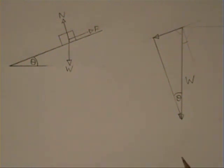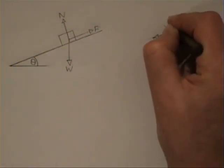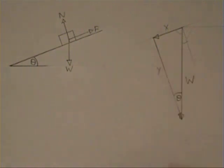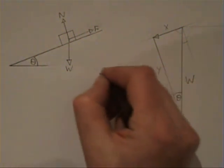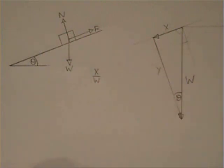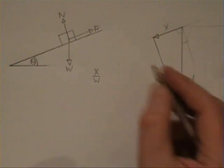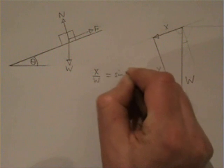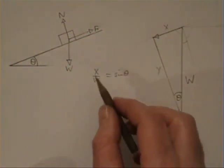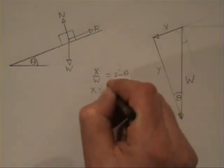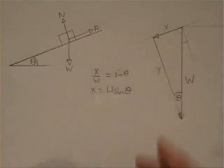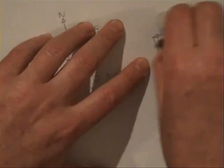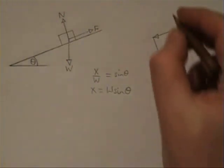To work out the components of W parallel to the slope and perpendicular to the slope, we need to use trigonometry in this vector triangle. If I call the parallel side x, then looking at the triangle, if theta is the angle we know, x is the opposite side. So we can write x divided by W equals opposite over hypotenuse, which equals sin theta. That means x equals W sin theta. So we replace x and call it W sin theta.